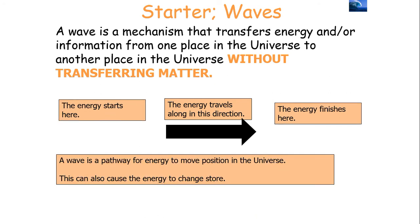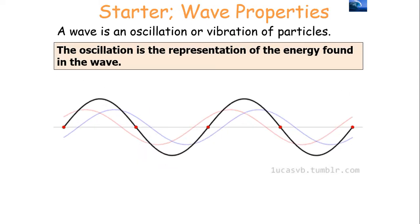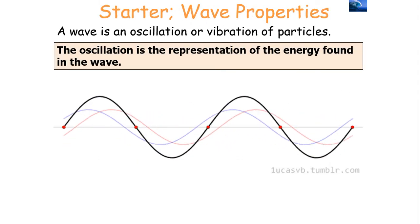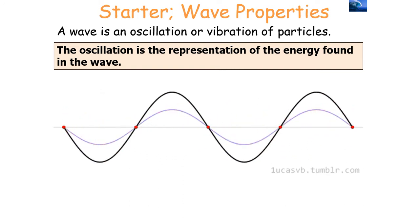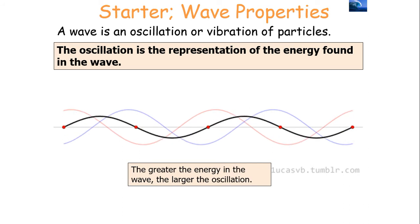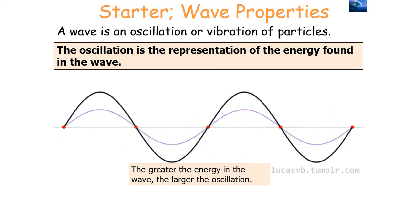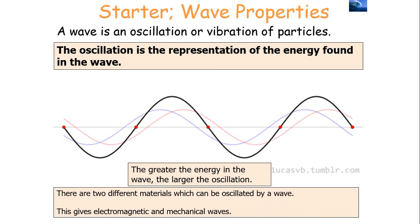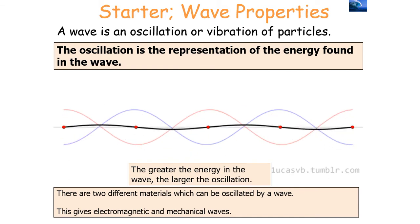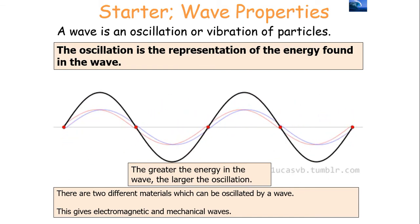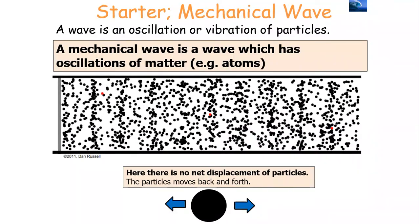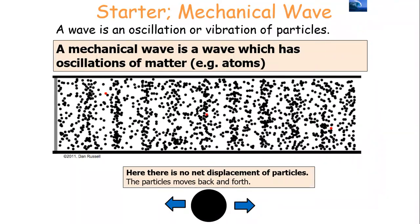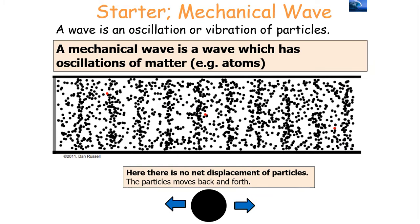A wave is a pathway for energy to move position in the universe and can cause the energy to change store. The wave is an oscillation or vibration of particles, and the oscillation is a representation of the energy found in the wave — so the greater the energy in the wave, the larger your oscillation. Two different materials can be oscillated by a wave: there can be electromagnetic waves and mechanical waves.